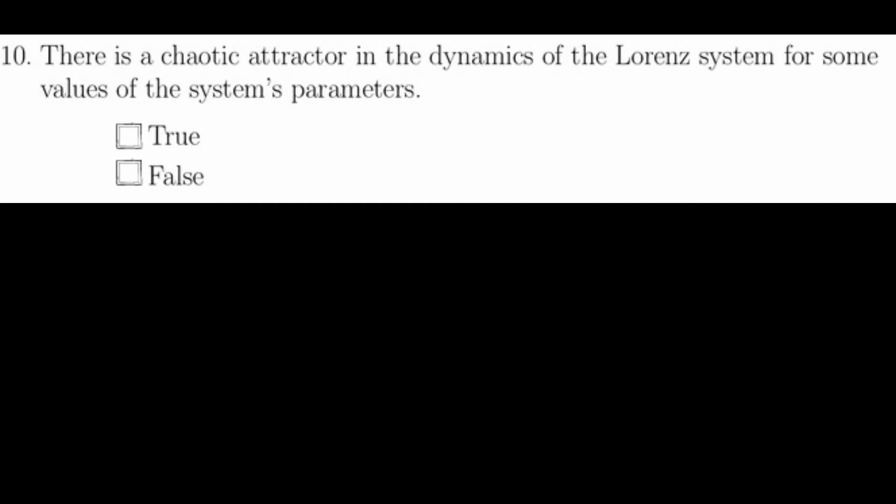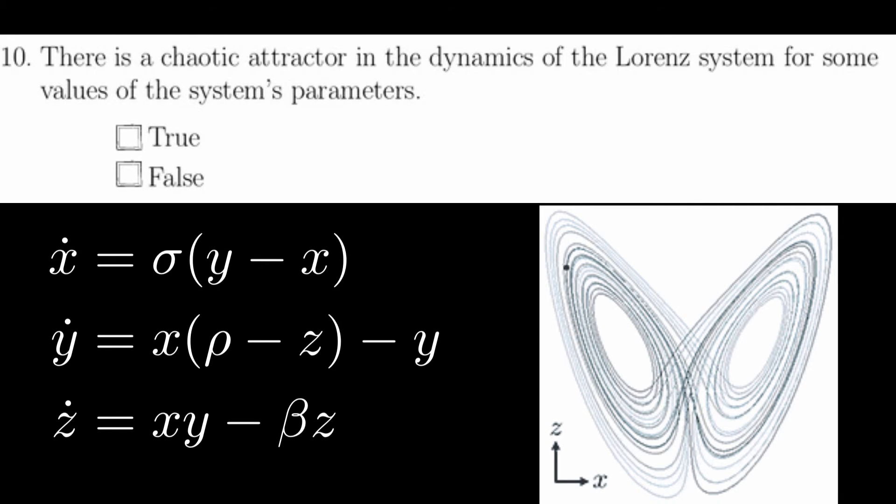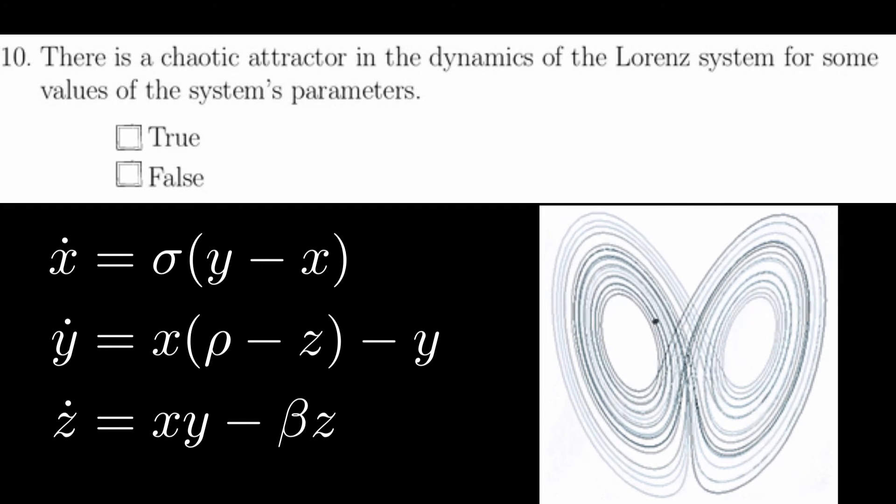Question ten asks if there's a chaotic attractor in the dynamics of the Lorenz system for some values of the system parameters. This is absolutely true, and why the Lorenz system is so famous. For example, see this attractor, which is a chaotic attractor of the Lorenz equations. The parameters used were rho equals 28, sigma equals 10, and beta equals 8 thirds.